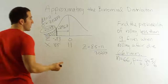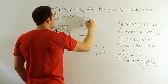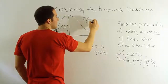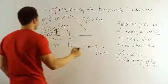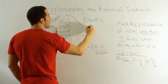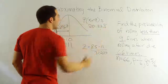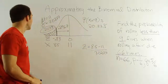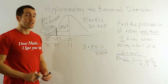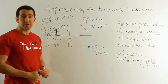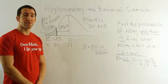So the probability that x is less than 9 is approximately 20.33%. Remember, this is an approximation, but it is likely very close to the actual answer.